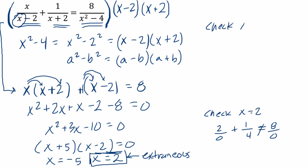But if we check x equals negative 5, let's make sure this works. We get negative 5 over negative 5 minus 2, which is negative 7, plus 1 over negative 3. Negative 5 plus 2 is negative 3,